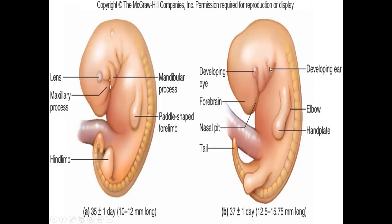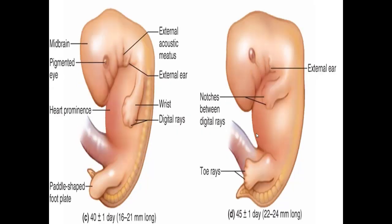Going ahead two more days, the developing ear is visible, the eye is a little more developed, and the elbow is becoming more recognizable. Adding a few more days — around day 40 to 41 — the eye is becoming more pigmented, the external ear features are more distinguishable, and the external acoustic meatus is visible. In the forelimb, the actual digits are starting to become a little more separated. The heart prominence is clear, and the tail has become much shorter than it was just days earlier.